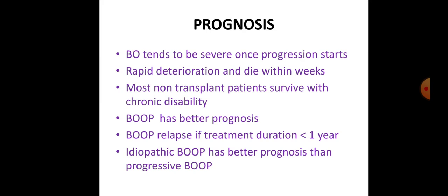Regarding prognosis, bronchiolitis obliterans tends to be severe; once progression starts, rapid deterioration can occur and the patient may die within weeks. Most non-transplant patients survive with chronic disability. Bronchiolitis obliterans organizing pneumonia has a better prognosis compared to bronchiolitis obliterans. In BOOP, relapse can occur if treatment duration is less than one year. Idiopathic BOOP has a better prognosis compared to the progressive form.